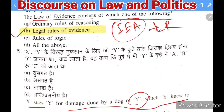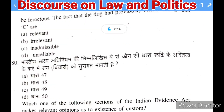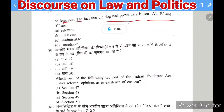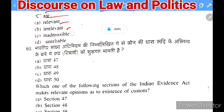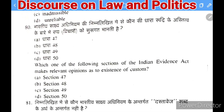Next question: X sues Y for damage done by Y's dog which Y knew to be ferocious. The fact that the dog had previously bitten A, B, and C — is this fact relevant, irrelevant, inadmissible, or unreliable? The right answer is relevant.